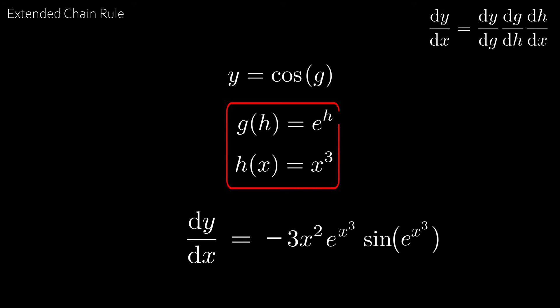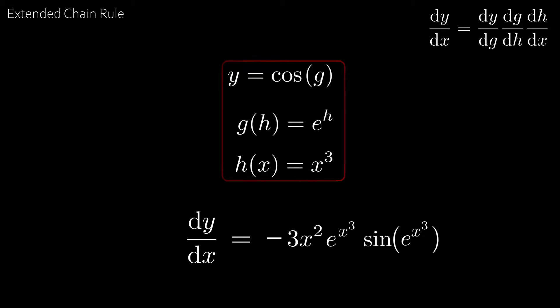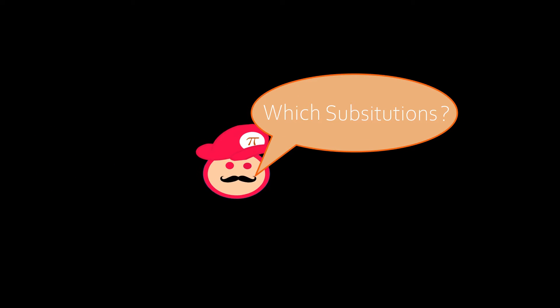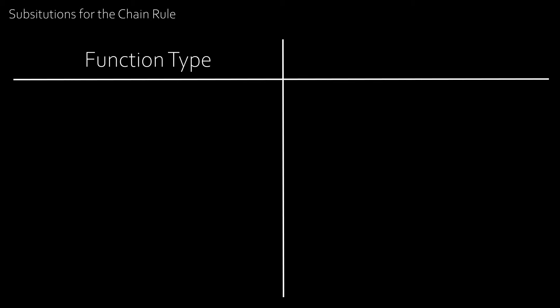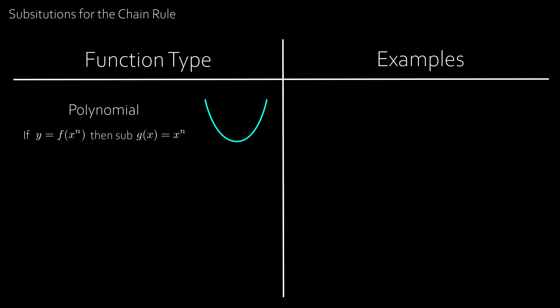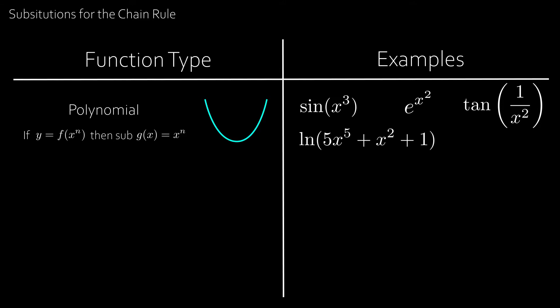We substitute in two functions such that every function can be written in a form we can differentiate. The question is: which substitutions should we make every time? Let's create a table with function type on the left and examples on the right. The first function type is polynomial: if y equals f of x to the n, sub in g of x equals x to the n. For example, sine of x cubed — sub in g equals x cubed; e to the x squared — sub in g equals x squared; ln of 5x⁵ + x² + 1 — sub in g equal to 5x⁵ + x² + 1; tangent of 1 over x squared — sub in g equals 1 over x squared.